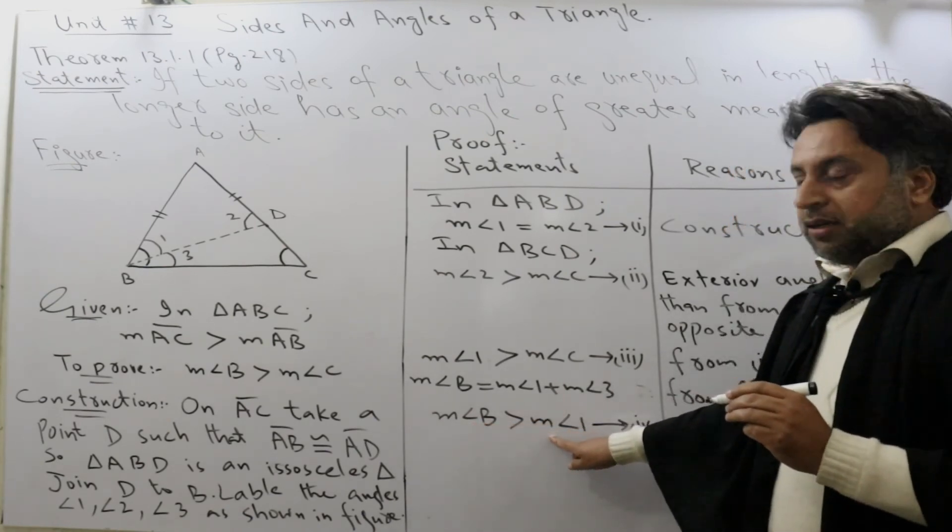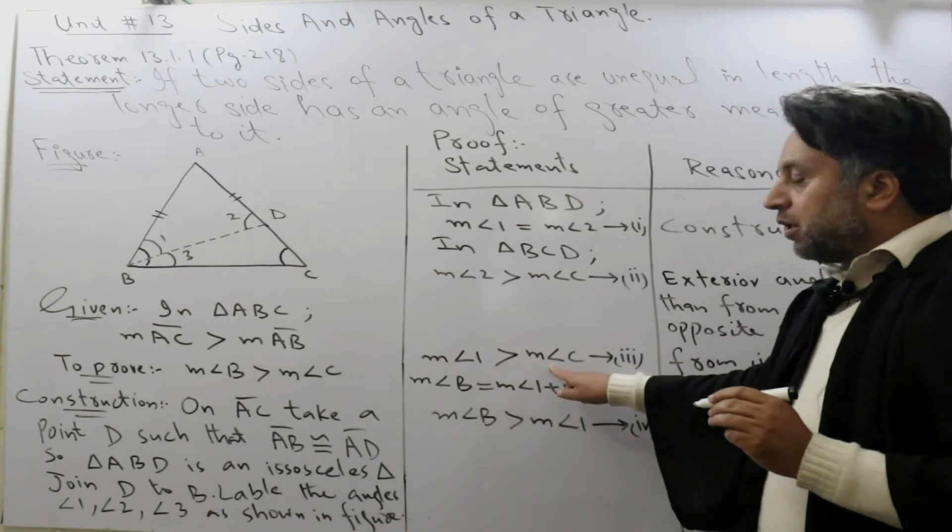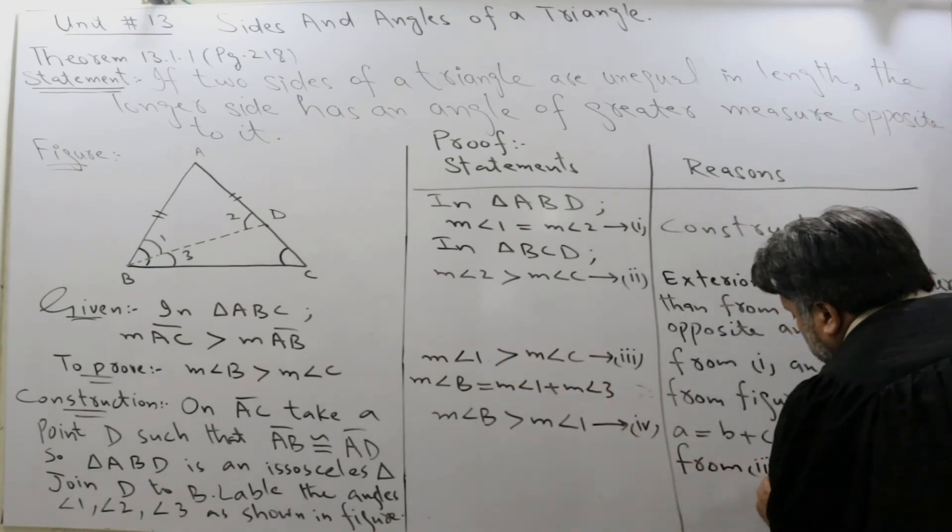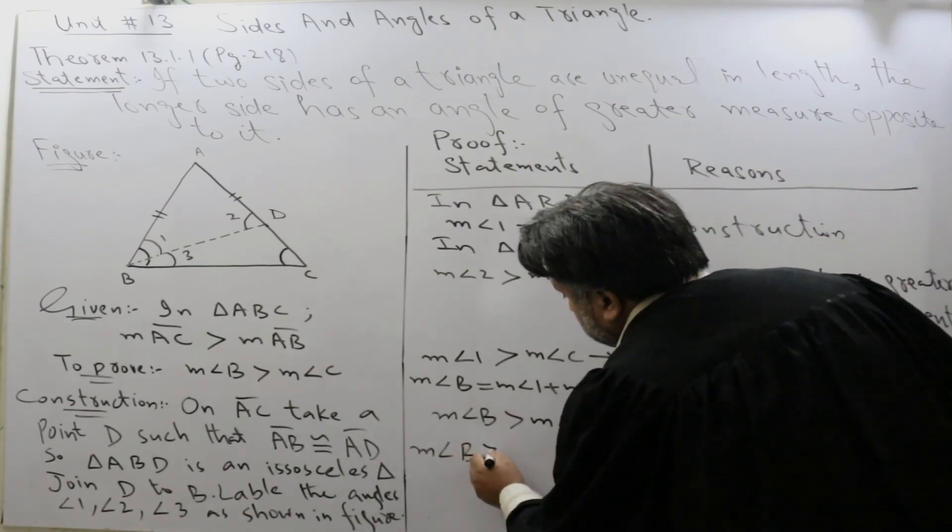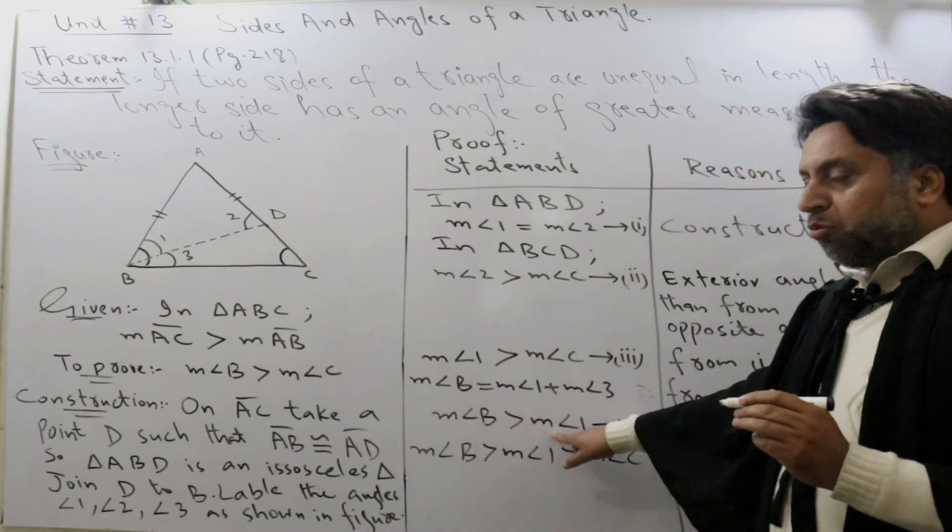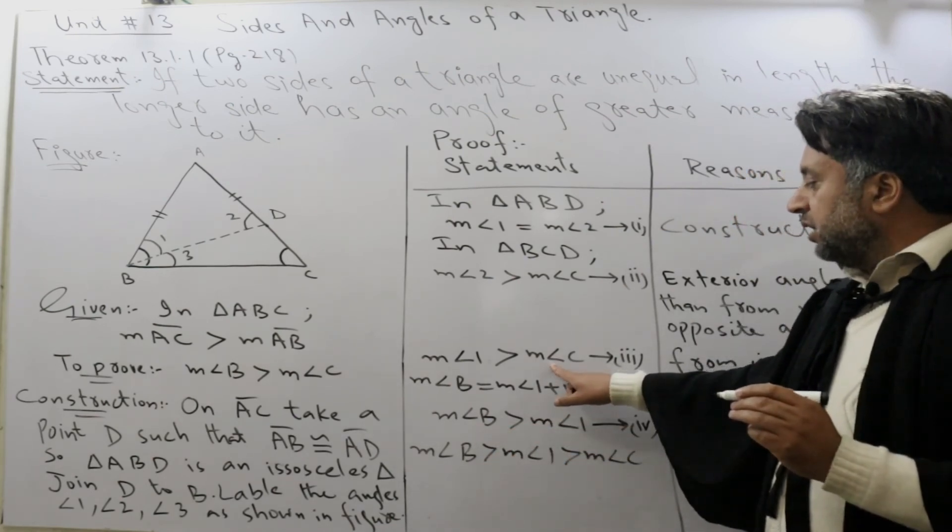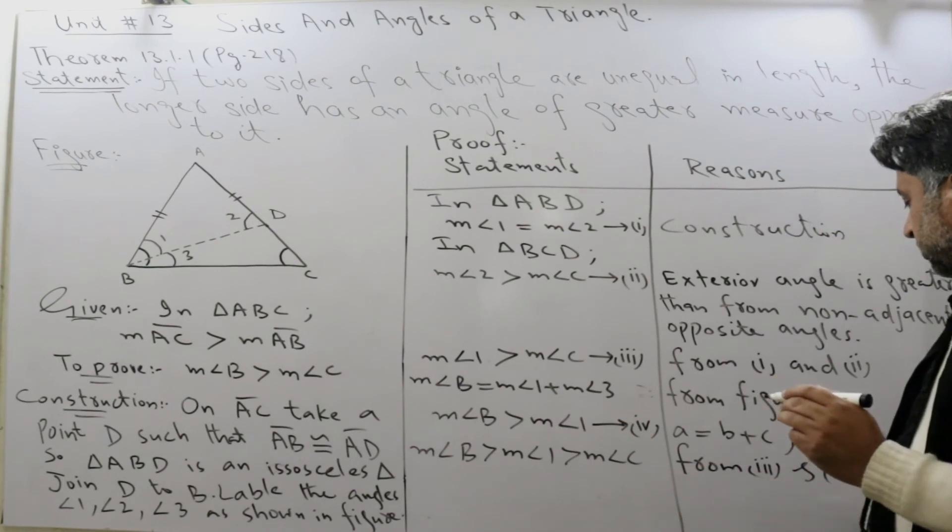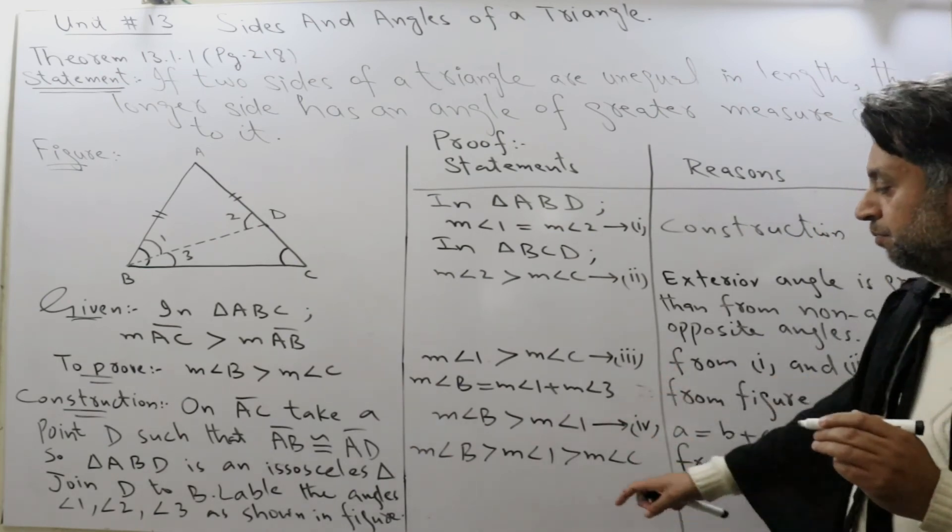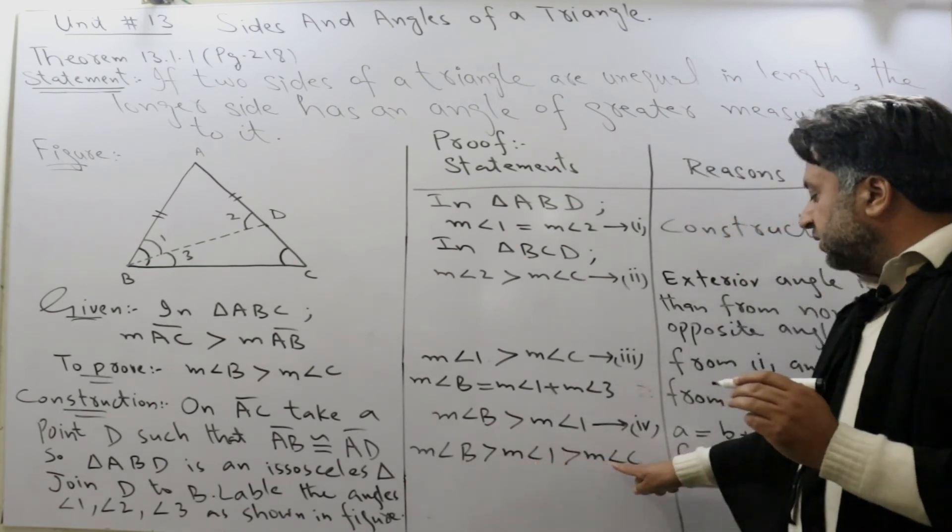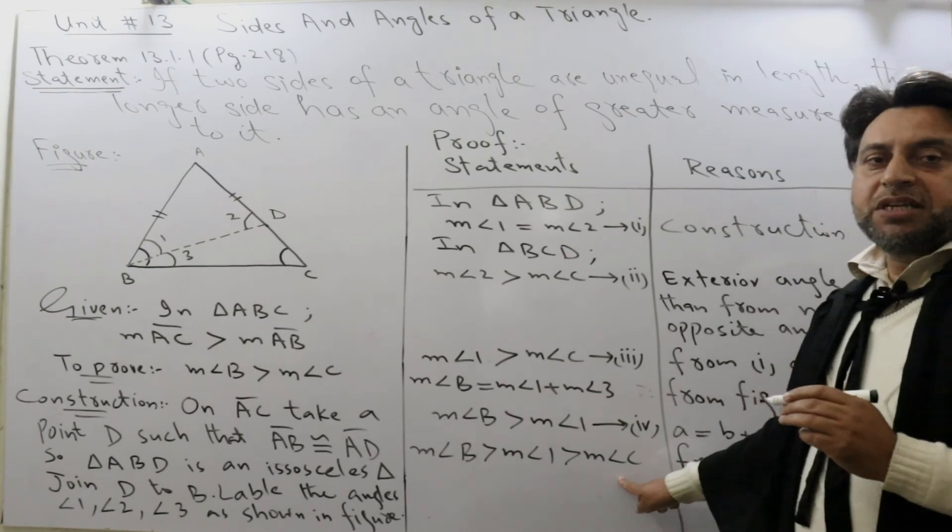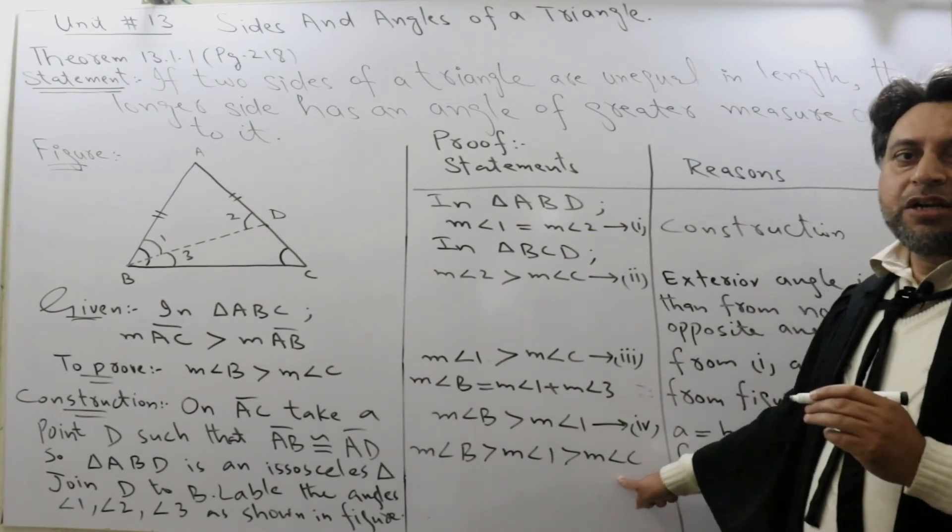Angle 1 is greater than angle C. Angle B is greater than angle C. We can write also that combining 3 and 4, when B is greater than 1 and 1 is greater than C, it means that B is greater than C. Such type of property is called transitive property of real numbers.